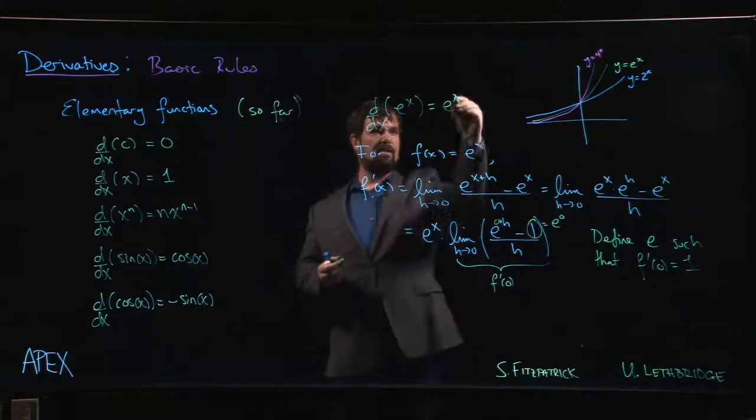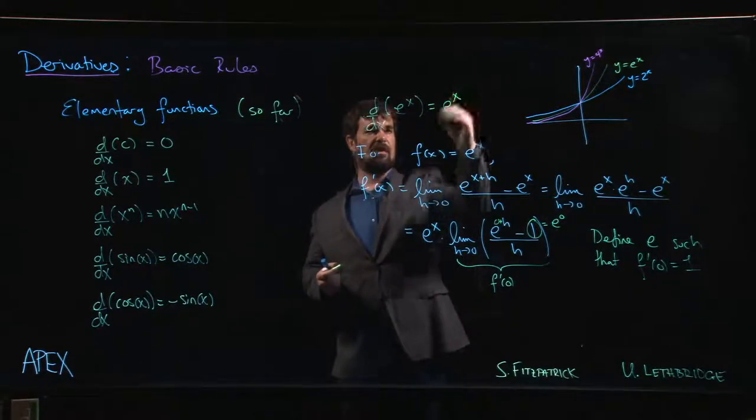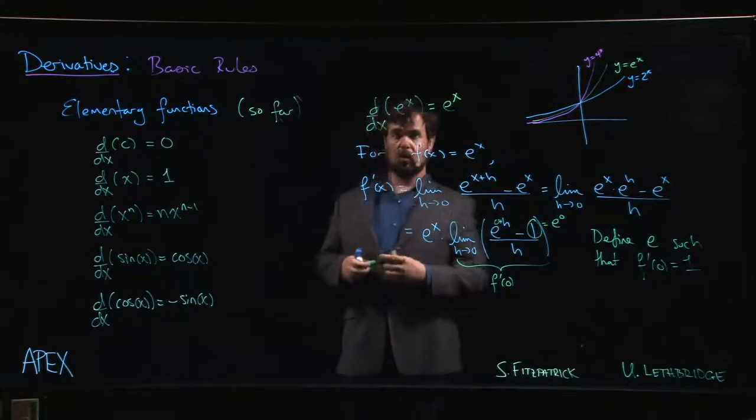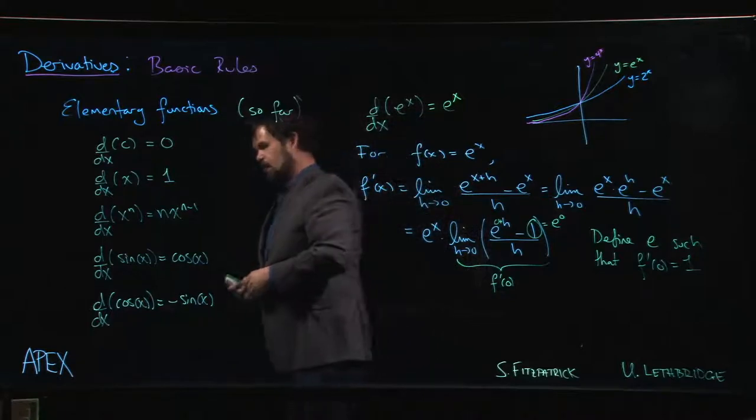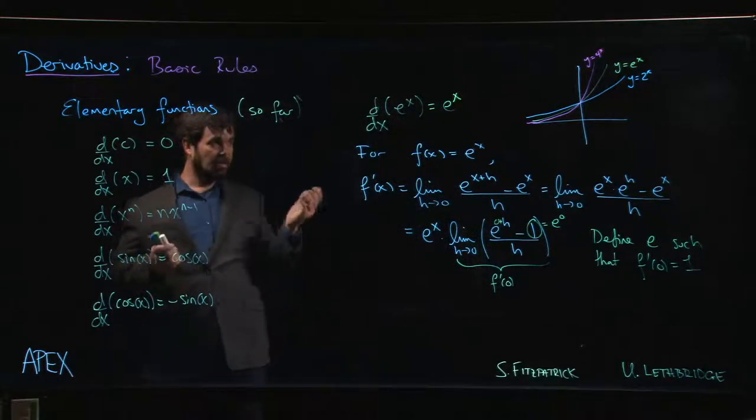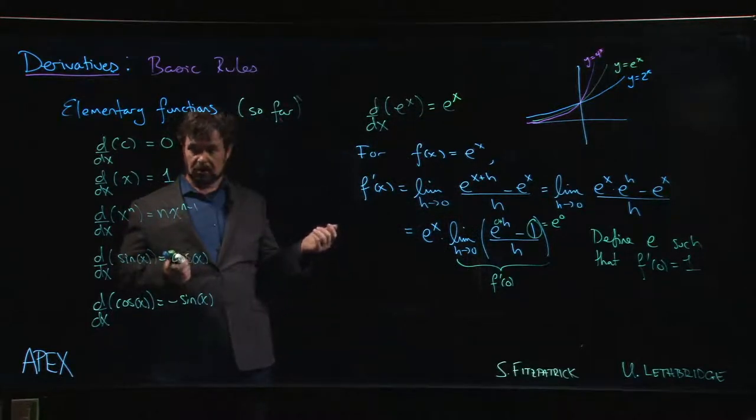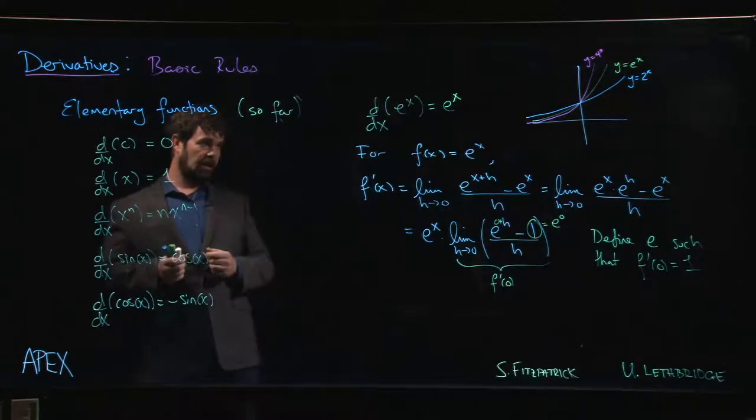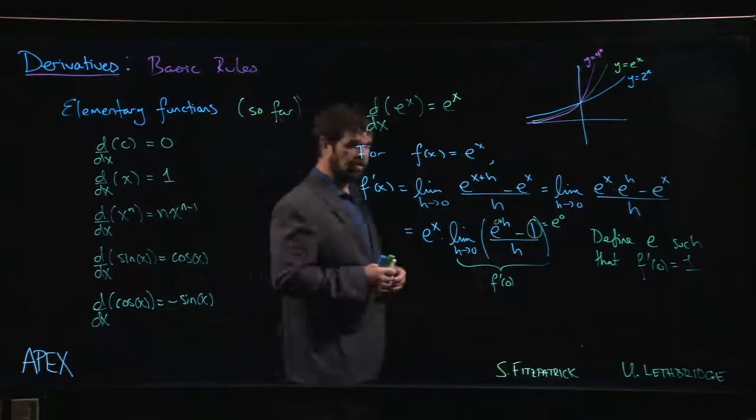So e to the x is very interesting, right? This natural exponential function is a very interesting function. It's a function which is equal to its own derivative. And in fact, there's only one other function that does that. The only other function that's equal to its own derivative, the 0 function, right? Derivative of 0 is 0. Or the derivative of e to the x is e to the x. So this is fairly interesting.